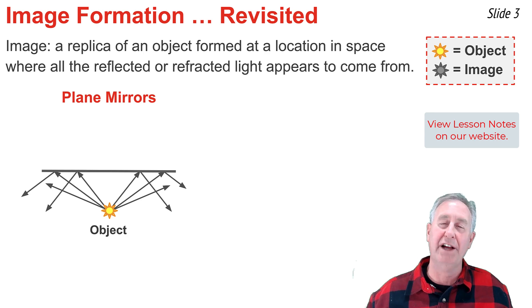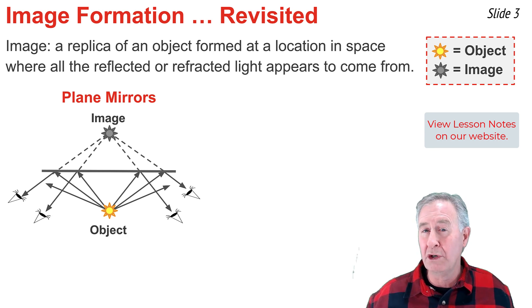it will reflect according to the law of reflection and diverge from one another. Any observer that sights along any of the lines of sight defined by a reflected ray will see an image of this object when sighting along that line of sight. The light's not actually coming from the image location, but to the observers, it appears as though all the light is coming from that location, and thus they see an image at that location.